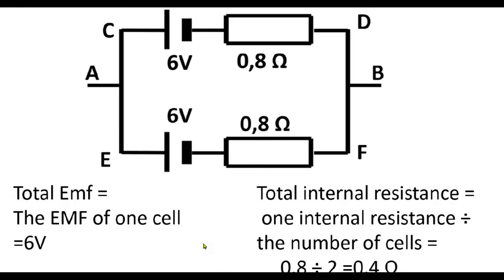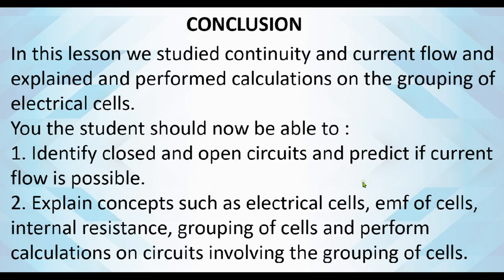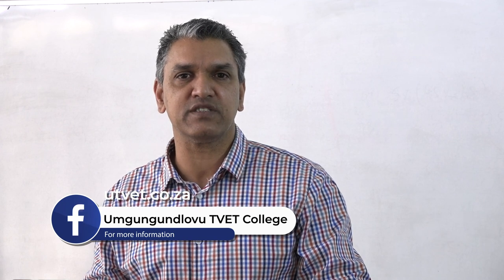In conclusion, in this lesson we have studied continuity and current flow, and explained and performed calculations on the grouping of electrical cells. You, the student, should now be able to identify closed and open circuits, predict if current flow is possible, explain concepts such as electrical cells, EMF of cells, internal resistance, and grouping of cells, and perform calculations on circuits involving the grouping of cells. Please take care, students — make sure you practice social distancing, use a mask, and ensure your safety at all times. Thank you.